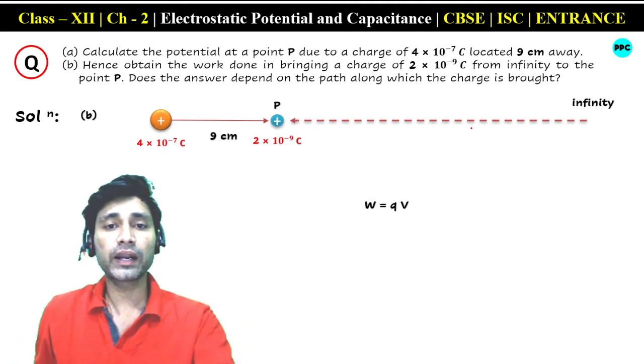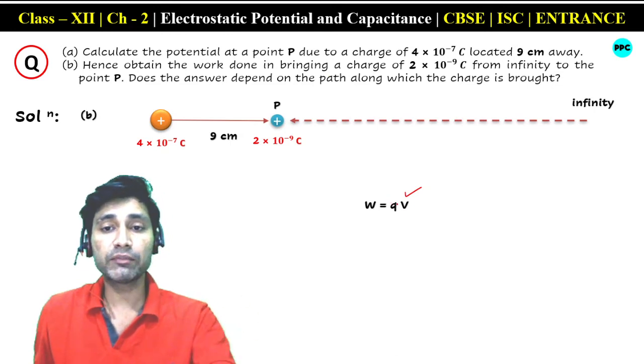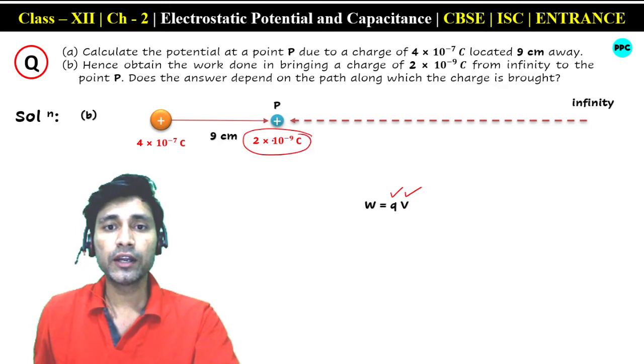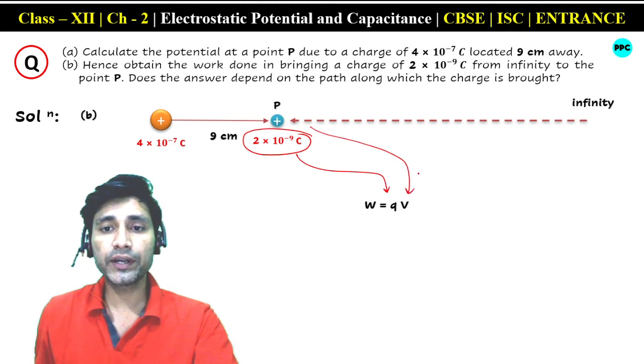That is, at which point the charge is brought, we multiply it by that point's potential. The charge brought is 2 × 10⁻⁹ coulomb, and the potential at point P is 4 × 10⁴ volt, which we just obtained.